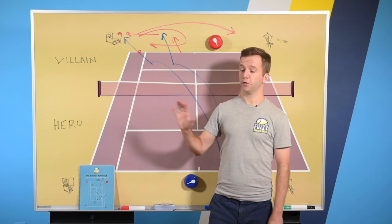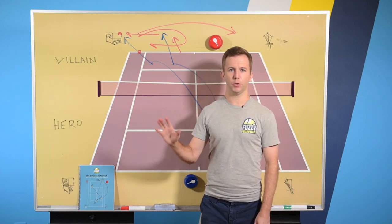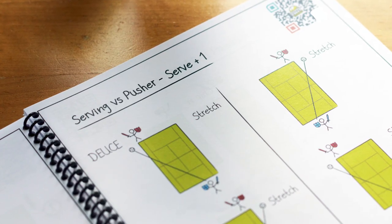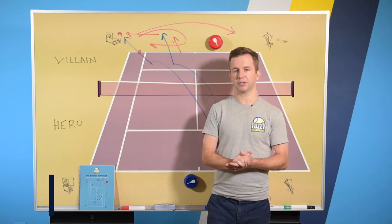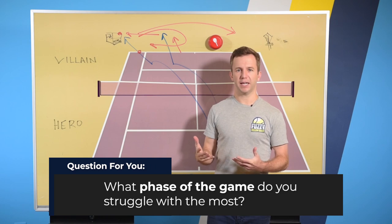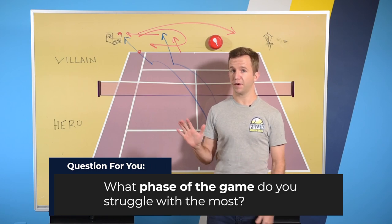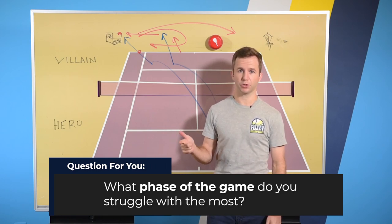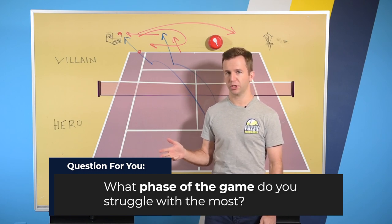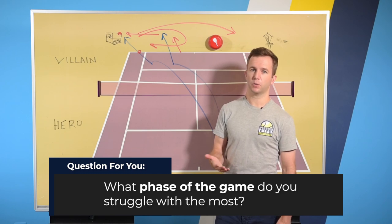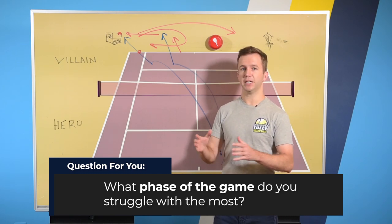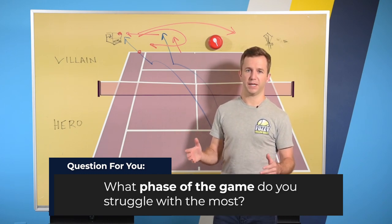Okay. So, as we wrap up this video, first of all, the next one is awesome. I'm going to show you a serve play you can use against a pusher. But the question I want to ask you right now is what phase of the game do you struggle with the most? Because there's five phases of the game. You're serving, you're returning, you're rallying, you're approaching the net, or villain is approaching the net. And the reason I'm asking this question is because you need to have plays for all five phases of the game.